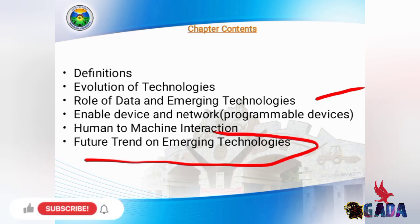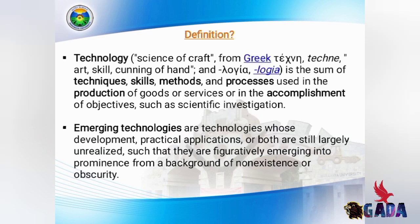This is the definition of Emerging Technology. Technology is one of the core skills of how to work on technology. Technology is designed for the science of the craft.